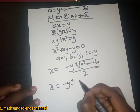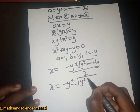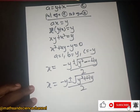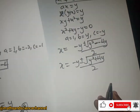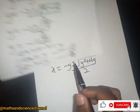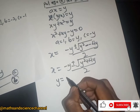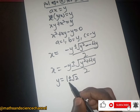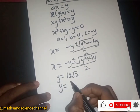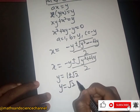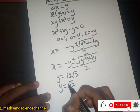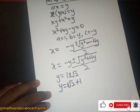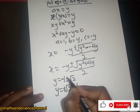So x equals y plus or minus square root of (y squared plus 4y), divided by 2. Remember y is equal to negative 1 plus or minus root 2, which can be written as root 2 minus 1.